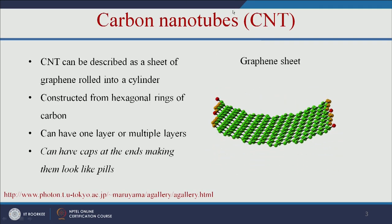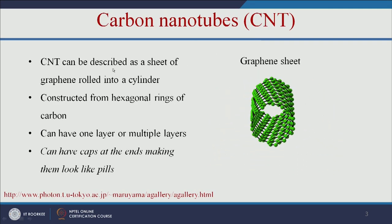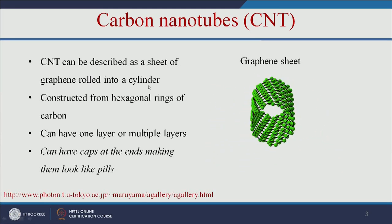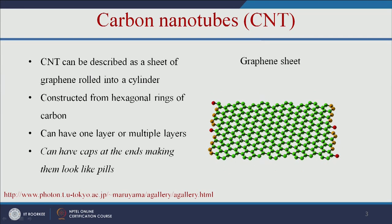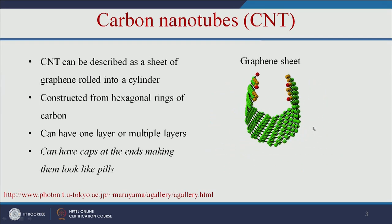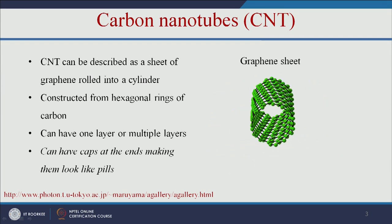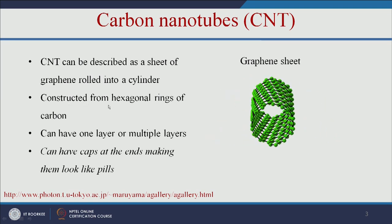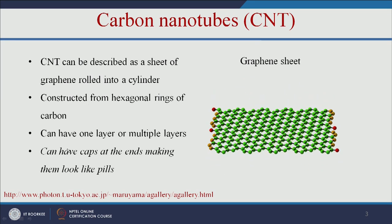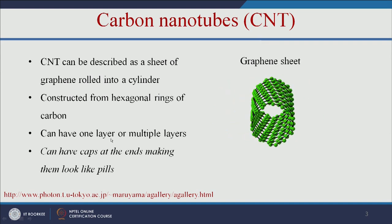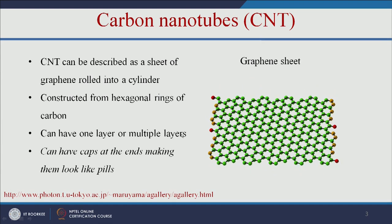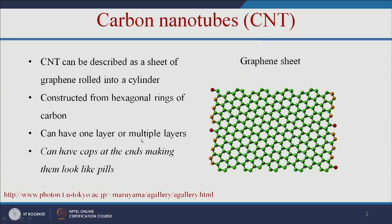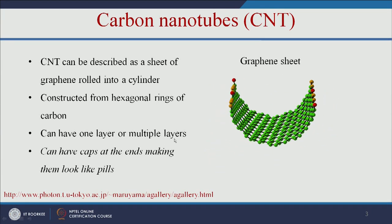The carbon nanotube can be described as a sheet of graphene rolled into a cylinder. Here you can see this animation — this is a graphene sheet rolled into a cylindrical shape, called a carbon nanotube. Graphene is mainly made up of hexagonal rings of carbon. If the nanotube has one layer of graphene sheet, that is a single wall carbon nanotube; if it has multiple layers, that is a multi-wall carbon nanotube.